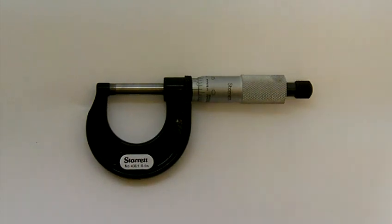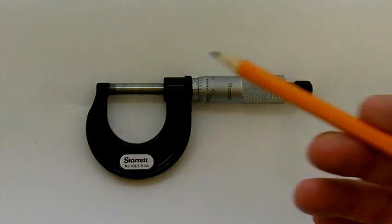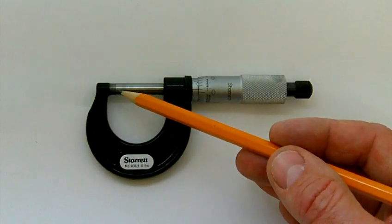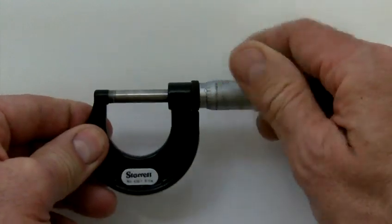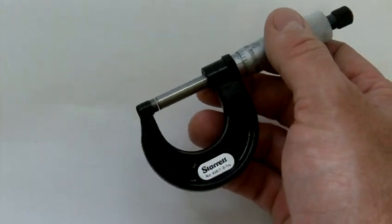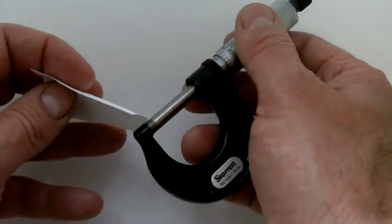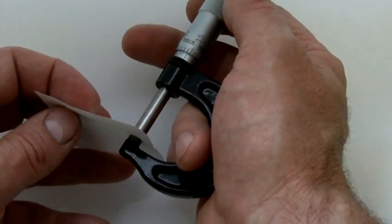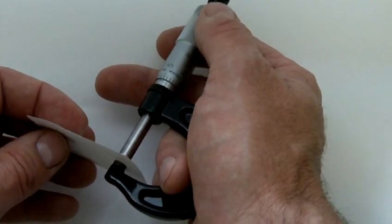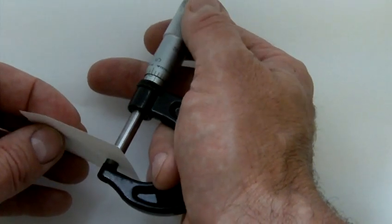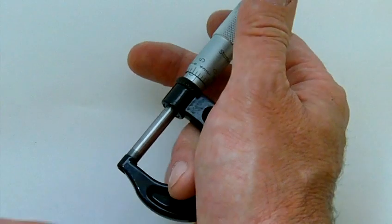The very first thing we want to do when we are checking the calibration is we want to clean the measuring points, which from the last video you know as an anvil and a spindle. So I'm going to take a piece of paper and put it between the anvil and the spindle, turn the thimble down so we get contact with the paper, and drag it off the part.